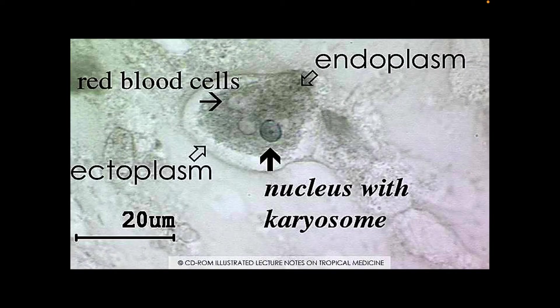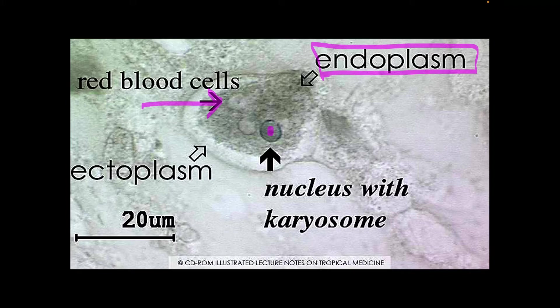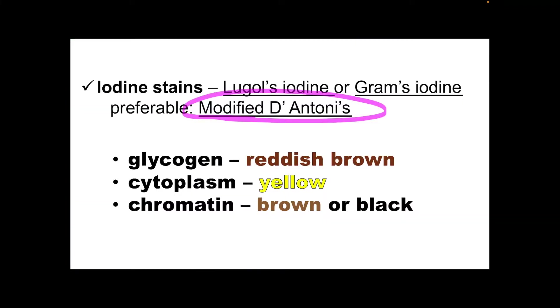This is the trophozoite of Entamoeba histolytica. To distinguish it from Entamoeba coli, we look at the endoplasm — what we see are ingested RBCs. There is only one nucleus and the karyosome is centrally located. An extension is visible for motility — that is a pseudopod. Antony's iodine would color the glycogen of the amoeba reddish brown, the cytoplasm yellow, and the chromatin brown or black.